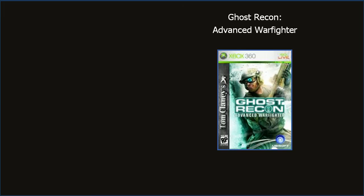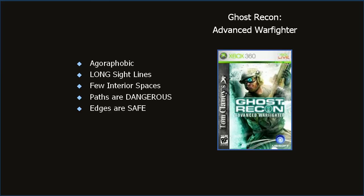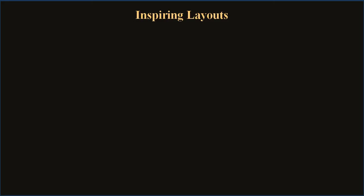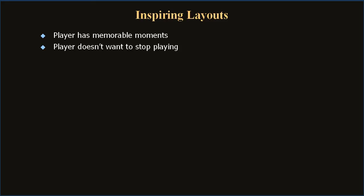Ghost Recon Advanced Warfighter inverts the Rainbow Six formula — no tight corridors. Claustrophobia has been replaced with agoraphobia, inverting the safety-danger relationship. Open spaces are scattered with cover, long sightlines create large flexible kill zones, and levels take place in a large district or region. The paths are dangerous — long or wide streets rife with conflict — while edges are safe, serving as transitions from one encounter to the next. A designer is faced with the challenge of presenting the same core ingredients over and over again, so it's critical to present new situations that feel different.